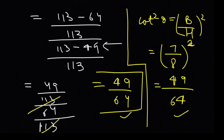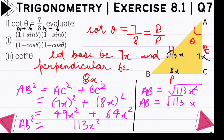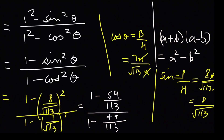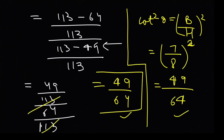So yeh is question ko is tarah solve karna tha. Jab aap trigonometric identities par aa jaoge, tab is first part ko phir se solve karke dekhna — us se easy ho jayega. Abhi nahi kara rahi kyunki identities agle exercise mein karni hain. So this is how you have to solve this question.